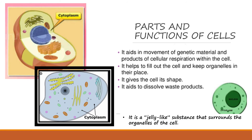Cytoplasm is also considered an organelle. Cytoplasm aids in the movement of genetic material and products of cellular respiration within the cell. It helps fill out the cell and keeps organelles in their place. It gives the cell its shape and aids in dissolving waste products. The cytoplasm looks like a jelly substance that surrounds the organelles of the cell.